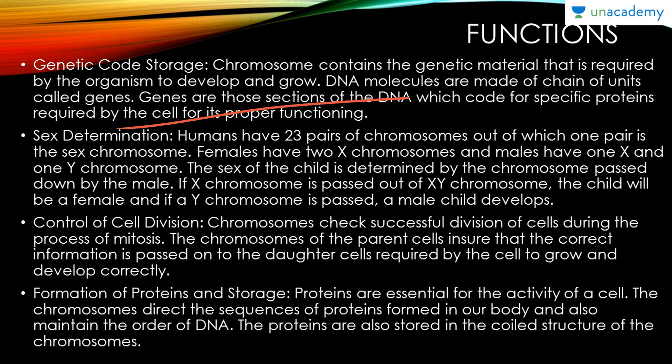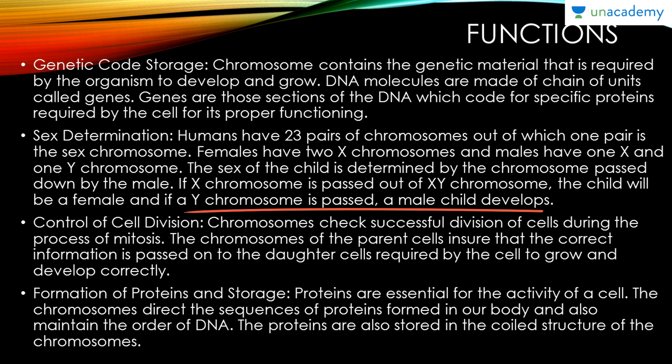The second function is sex determination. Humans have 23 pairs of chromosomes, one pair being the sex chromosomes. Females have two X chromosomes and males have one X and one Y. The sex of the child is determined by which chromosome is passed from the male: if X is passed, the child will be female; if Y is passed, the child will be male.